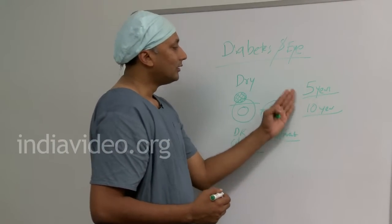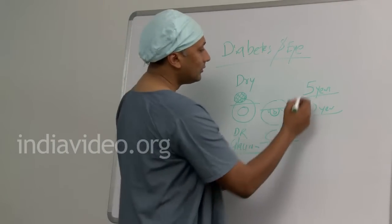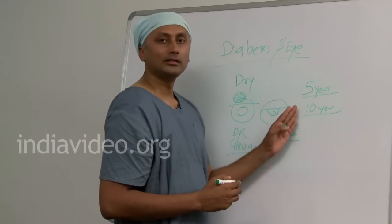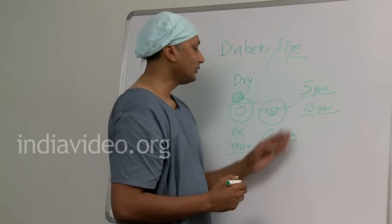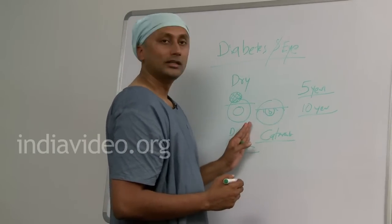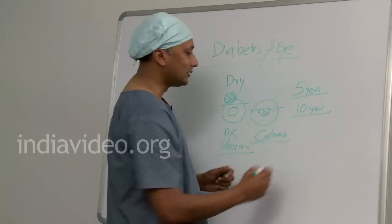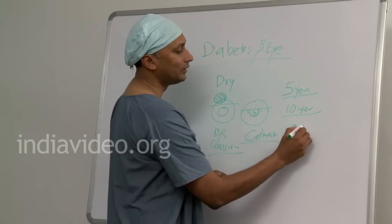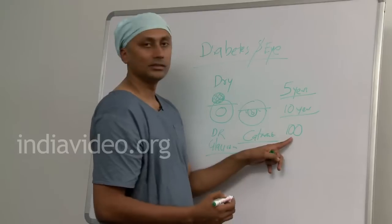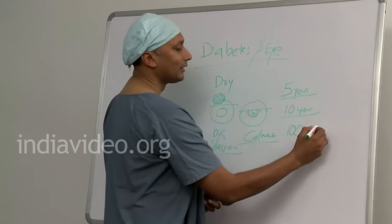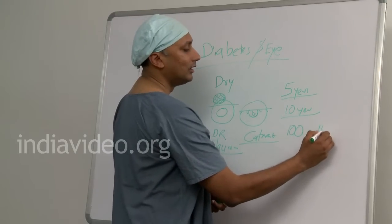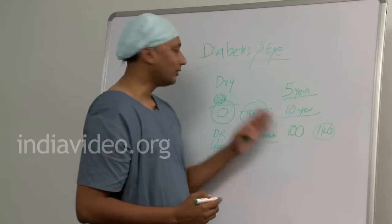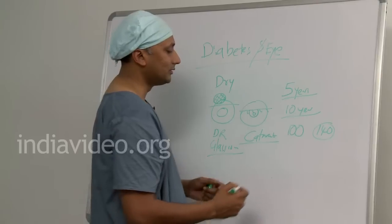But the duration of the disease has only a slight bearing on the incidence of all these diseases. Most important is blood sugar control — fasting blood sugar is normally 100, and if it is 140 or more, there is a chance of developing all these complications.